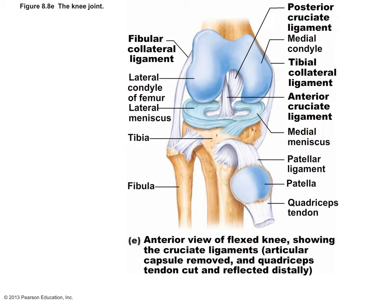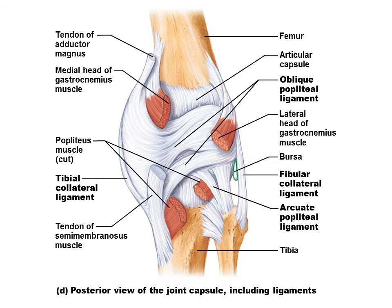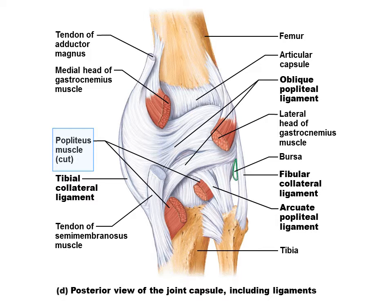Here we see an anterior view of the knee with the patella and joint capsule removed. The fibular and tibial collateral ligaments — extracapsular ligaments — are clearly visible. They not only prevent hyperextension of the knee, but also prevent rotation when the knee is completely extended, such as when standing. A more superficial view shows the oblique popliteal ligament, which is actually part of the semimembranosus muscle tendon — one of the hamstring muscles — wrapping around the posterior surface of the knee to stabilize the joint. The arcuate popliteal ligament reinforces the joint capsule by connecting to the head of the fibula. Also visible is the popliteus muscle, responsible for unlocking the knee when going from standing to sitting.